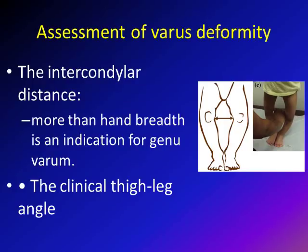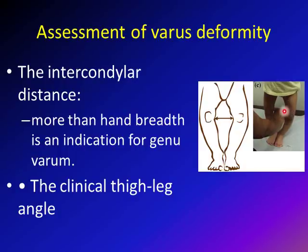After discussing normal knee alignment, let's see how we can assess varus deformity. The first tool is the intercondylar distance — the distance between the two medial femoral condyles. This distance increases in cases of Genu Varum, and if it is more than a hand breadth, roughly six centimeters, that is indicative of Genu Varum. The other assessment tool is the clinical thigh-leg angle, measuring the angle between the thigh and the leg.